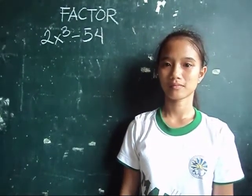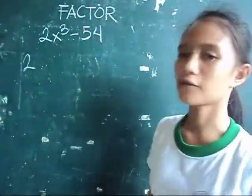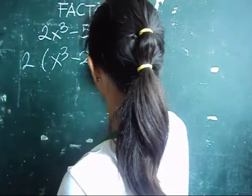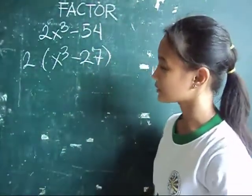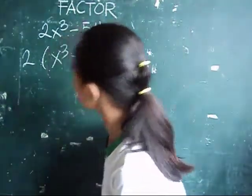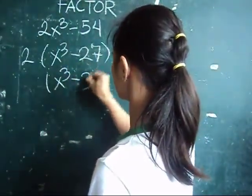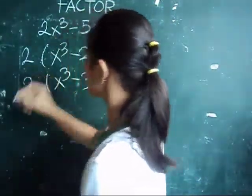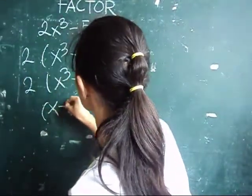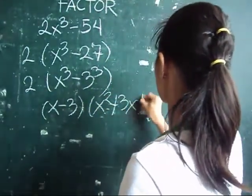Factor 2x cubed minus 54. Factor out 2. The other factor is x cubed minus 27. But we can still factor x cubed minus 27. Write it in the form difference of two cubes. So the factors are 2, x minus 3, and x squared plus 3x plus 9.